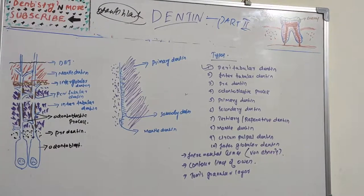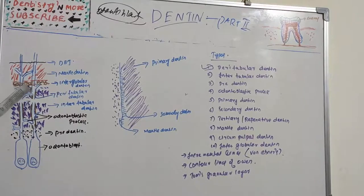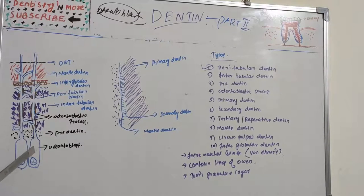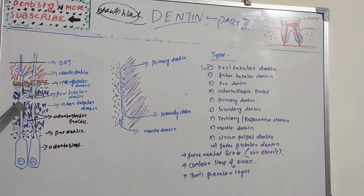Always try to understand the concept with a picture in your mind so it will be easy to reproduce in your answer sheets. Peritubular dentine is the dentine that immediately surrounds the dentinal tubules — shown here in brown color around the dentinal tubule. This peritubular dentine is highly mineralized compared to intertubular dentine.